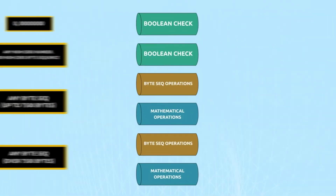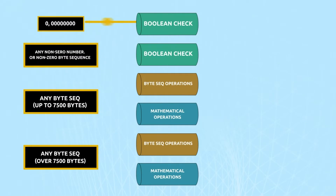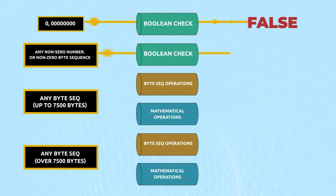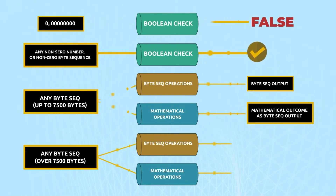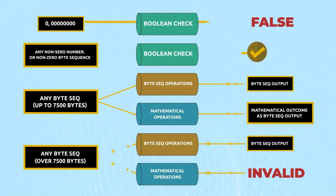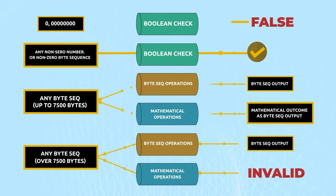In this animation, we can see how different data types are treated by the different operations which are possible in the Bitcoin scripting language. All Bitcoin script data items are in a byte sequence. This allows node operators to interpret their parameters as string, numeric, or boolean values.